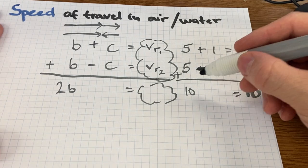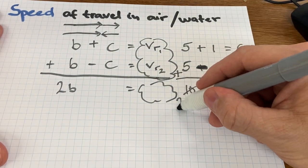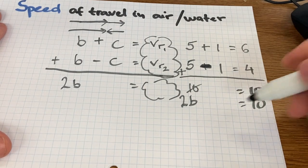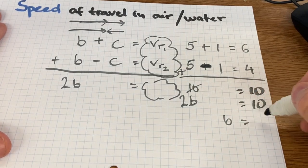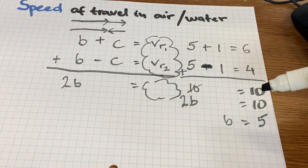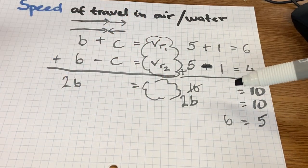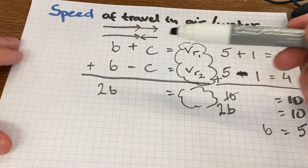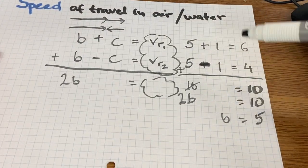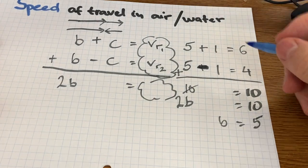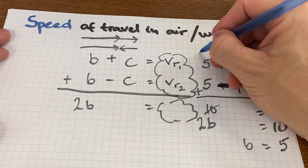So there's going to be 2B here. 2B equals 10, therefore B, the speed of the boat, is going to be 5 when the equation is solved. So something like this, adding two equations with two variables with opposite signage, will work something like this.